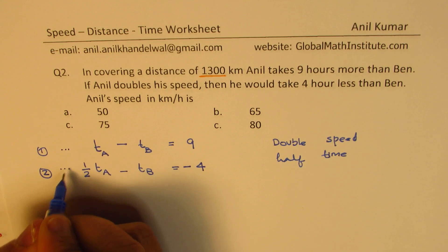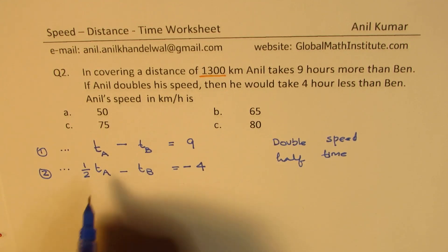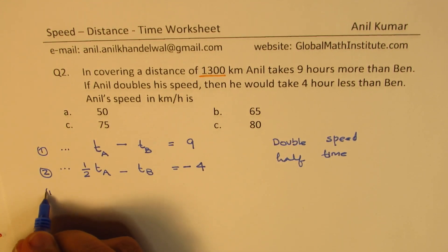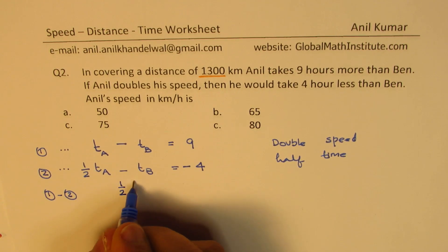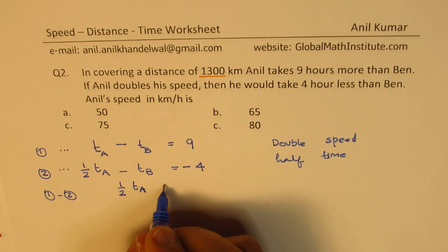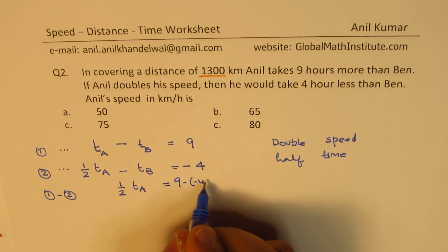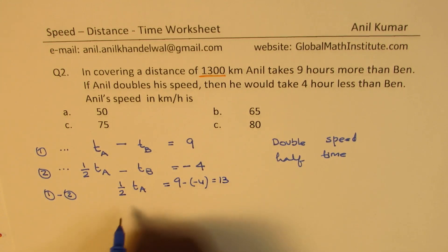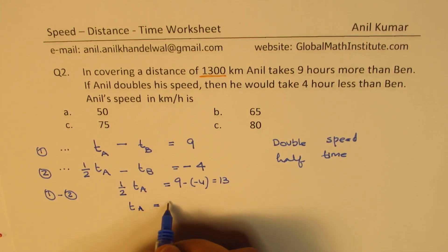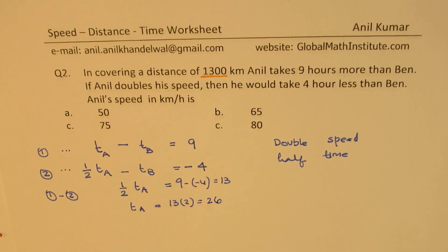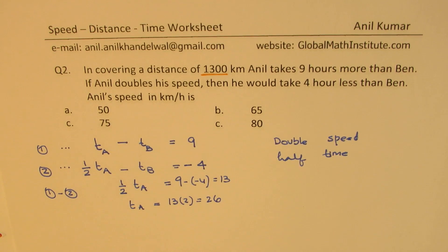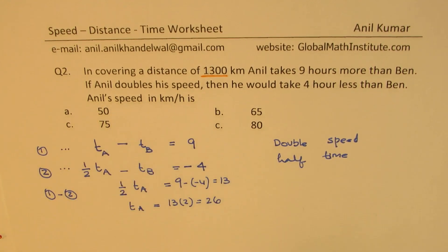To solve these equations, we do equation one minus equation two. We get: half of T_A equals 9 minus (minus 4), which is 13. So the time taken by Anil is 13 times 2, which is 26 hours. Now we need to find Anil's speed — speed equals distance divided by time.